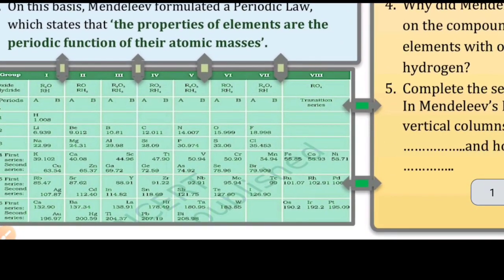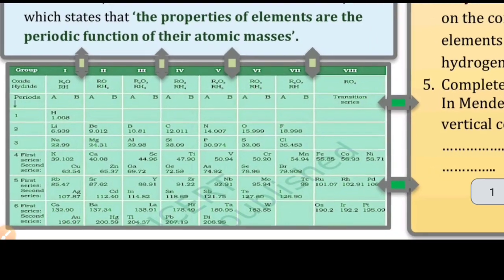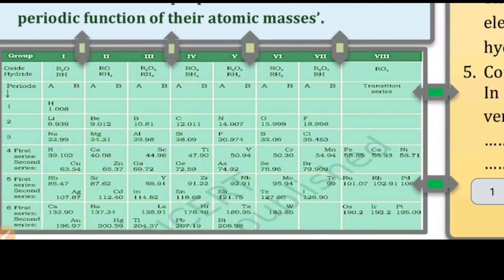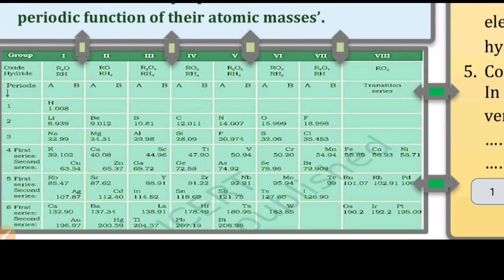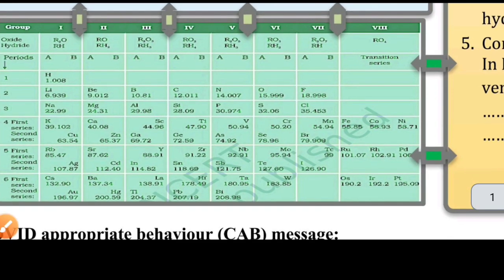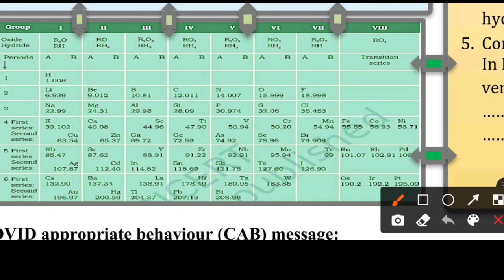Now look at Mendeleev's periodic table, which is also given in your books. In this table you can see oxide and hydride formulas listed. There are periods on one side and groups labeled A and B. The formula R₂O is written at the top of the oxide column, where R represents any element in that group.